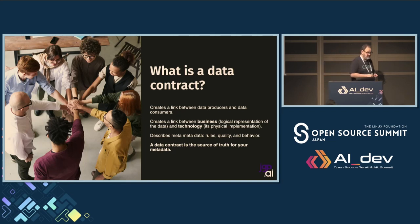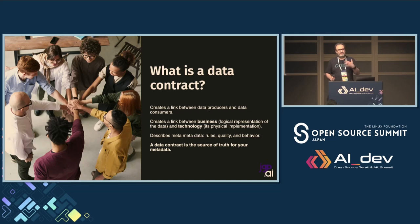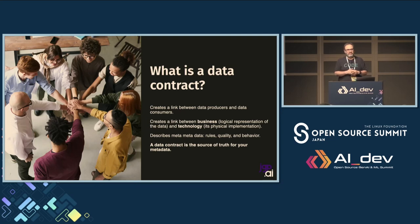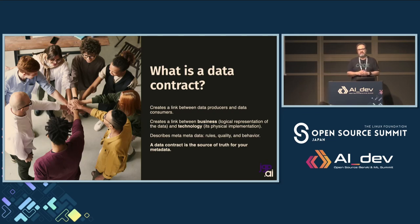It's also described as 'meta metadata' — and it's not a typo. What I mean by meta metadata is the behavior of the data, the data quality rules, your SLAs, et cetera. When you've got these three things together, you can decide that your data contract is your source of truth for your metadata. We often think about the source of truth for our data, but here it's a source of truth for your metadata, and that makes a lot of things easy and solves quite a few problems.